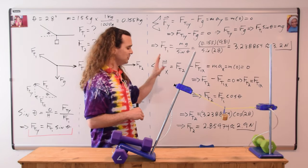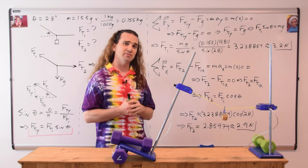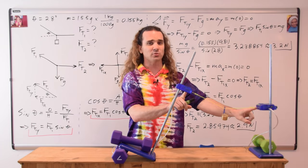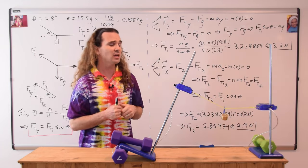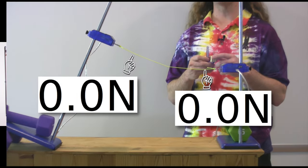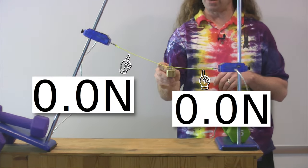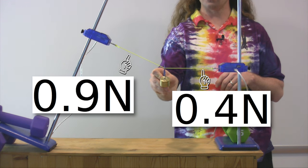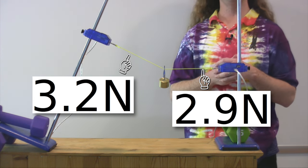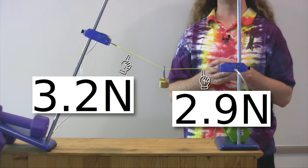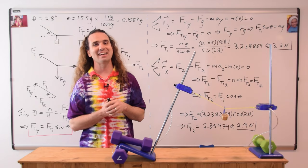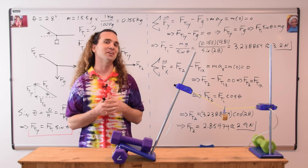We have solved for the force of tension in each of the two strings. You may not have noticed, but these two blue items are force sensors. Let's go back to the very beginning when I added the mass to the string — you can see the force that we measured using those two force sensors matches exactly what we got from solving the problem, which is nice. That's pretty cool. Thank you very much for learning with me today. I enjoyed learning with you.